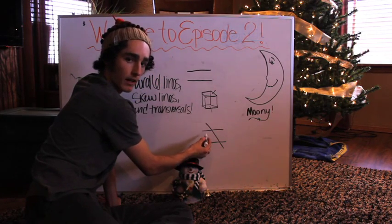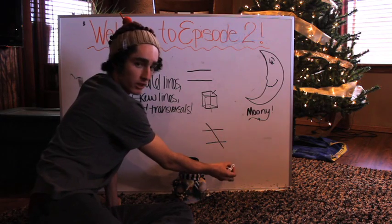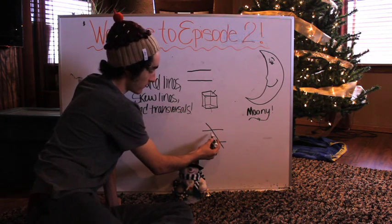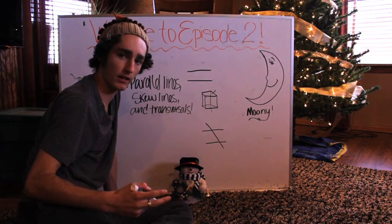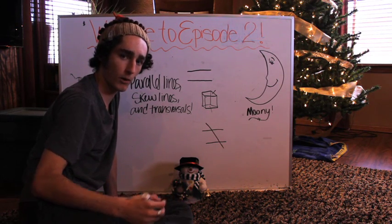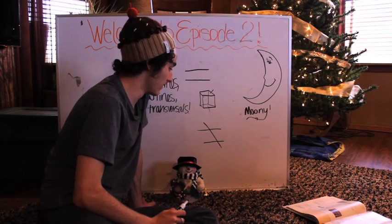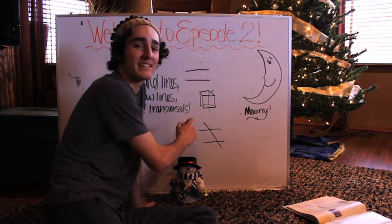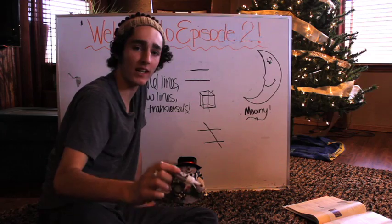Those are parallel lines with the transversal going right down the middle. A transversal is a line that crosses two or more parallel lines. Mooney told me that. When transversals cross two parallel lines, they form different kinds of angles.